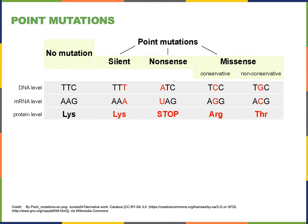Typically a nonsense mutation will have a severe effect on the function of a protein. A missense mutation is a type of mutation where a codon for one amino acid changes to a codon for a different amino acid. The first example is a conservative missense mutation where the amino acid lysine is changed to the amino acid arginine. Lysine and arginine are both cationic side chains — they both have a positive charge — and so they will have a similar function for the resulting polypeptide.